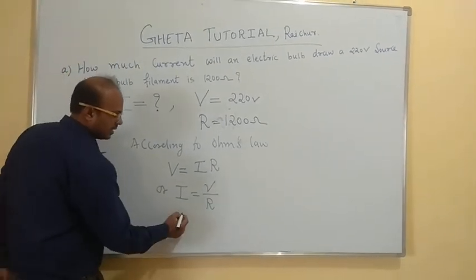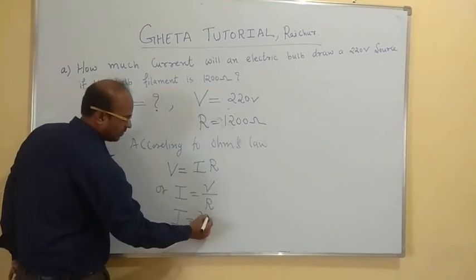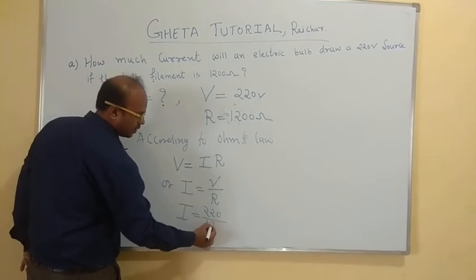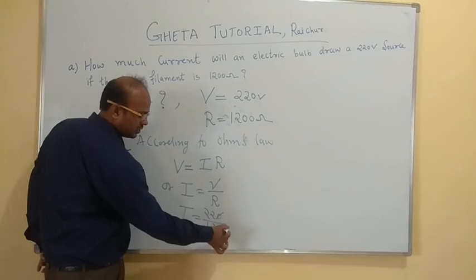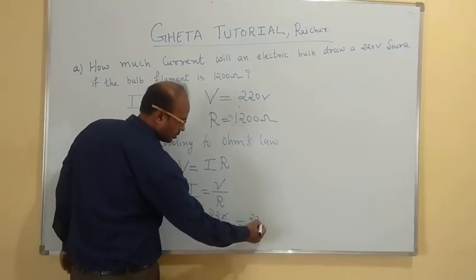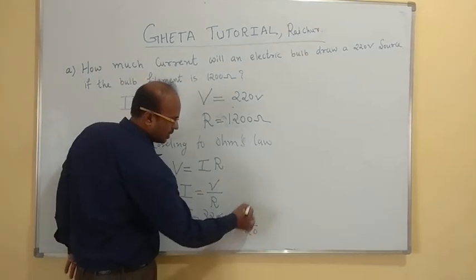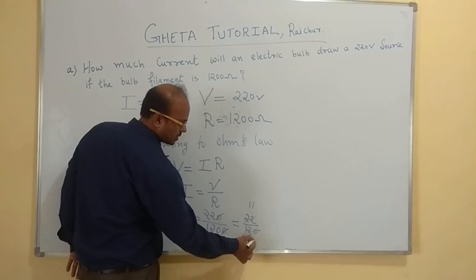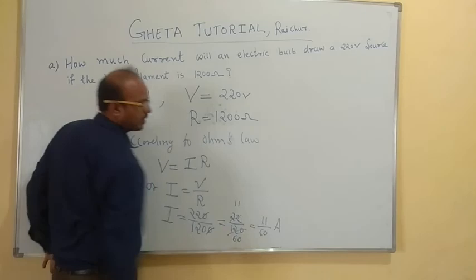So here in the place of V we have to substitute 220 volt divided by 1200. If you divide this equation we can cancel, so it will be equal to 22 divided by 120. We can cancel, so here the answer becomes 11 by 60 ampere.